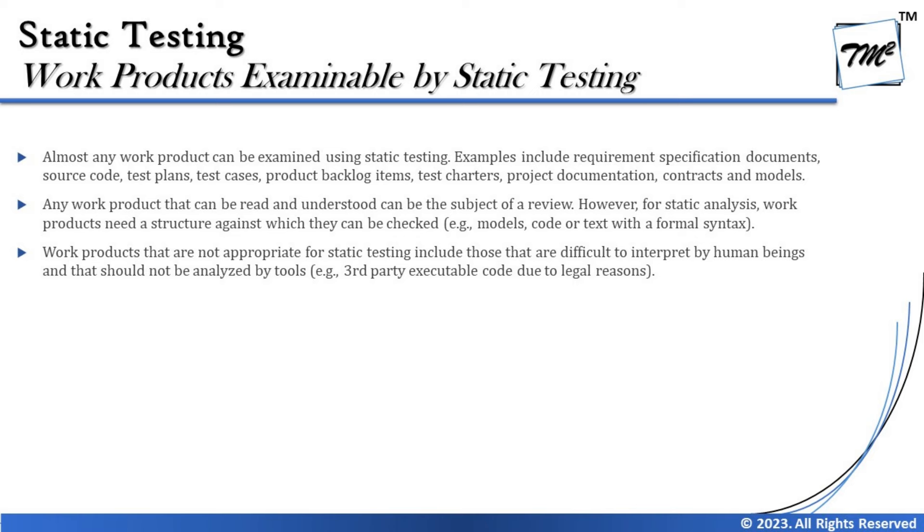Whether it's a requirement, code, test case, test plan, or project plan — any such document must be reviewed for anomalies, because as we understood from chapter one, humans are error-prone and mistakes should be found before they propagate into other activities like design and development. Almost any work product can be examined using static testing. Examples include requirement specification documents, source code, test plans, test cases, product backlog items, test charters, project documentation, contracts, and models.